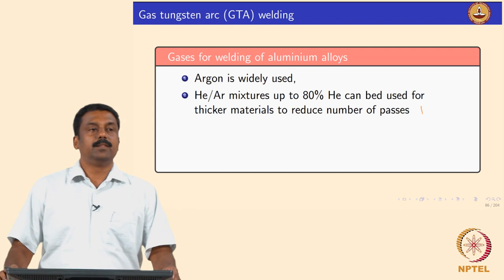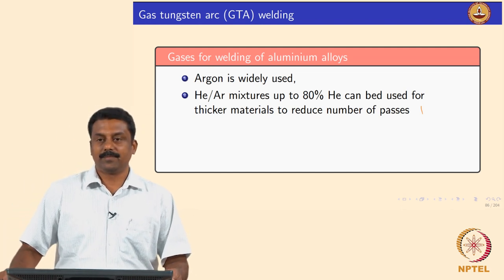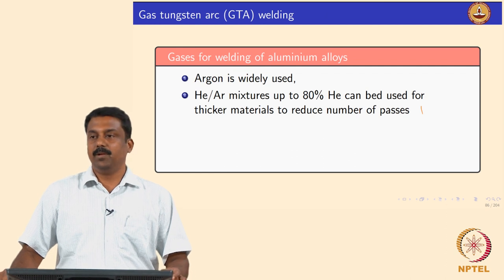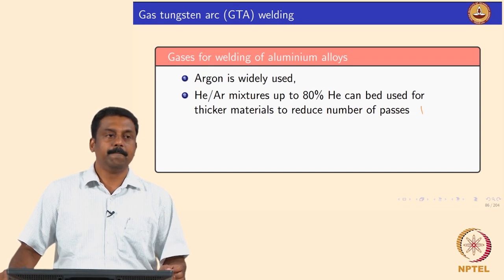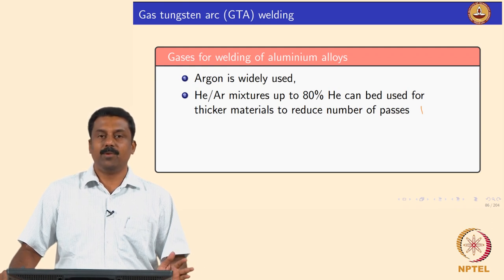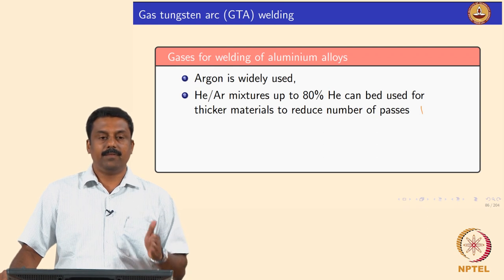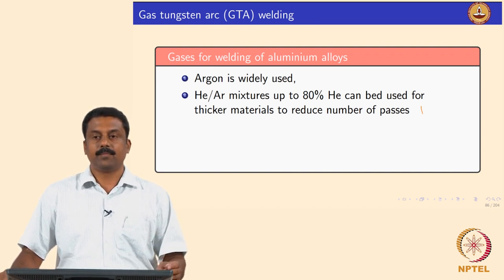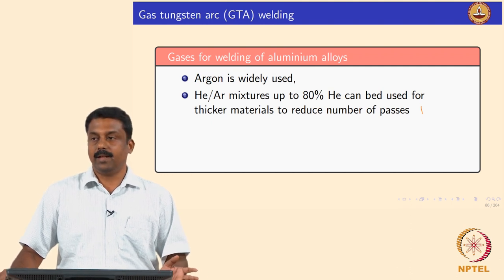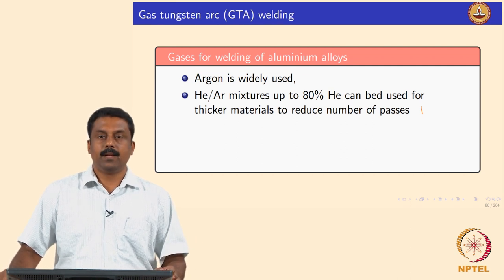For aluminium, argon is widely used. Thin sheets of aluminium are mostly welded by GTAW with argon. If you want to weld thicker sections, you can add helium - helium can be added up to 80% to increase depth of penetration by increasing the heat input, thereby reducing the number of passes.